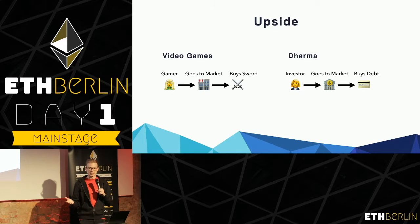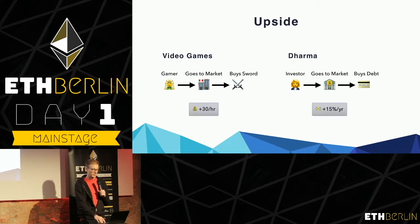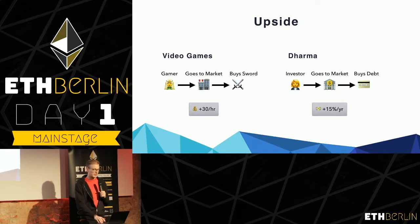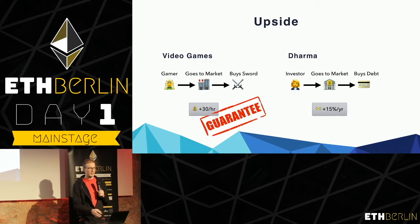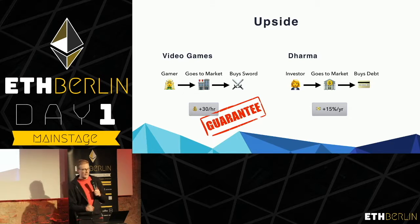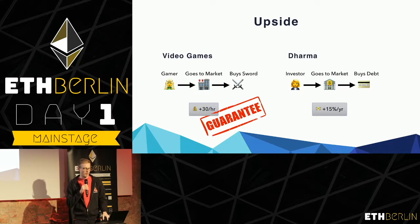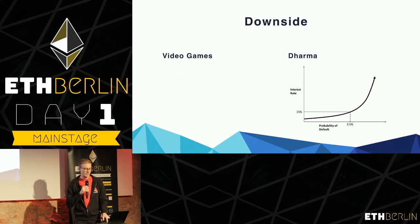You can see the upside to both of these kinds of systems are very similar — both are hoping to return some increase to their productivity. But there is one big difference: in video games, it's designed into the ecosystem, so when you have that asset it's guaranteed you're always going to earn that extra 30 loot with the double sword. That's not always the case with a project like Dharma, where that 15% doesn't come from a designed ecosystem — it's actually coming from the probability that there's going to be a default on that loan.